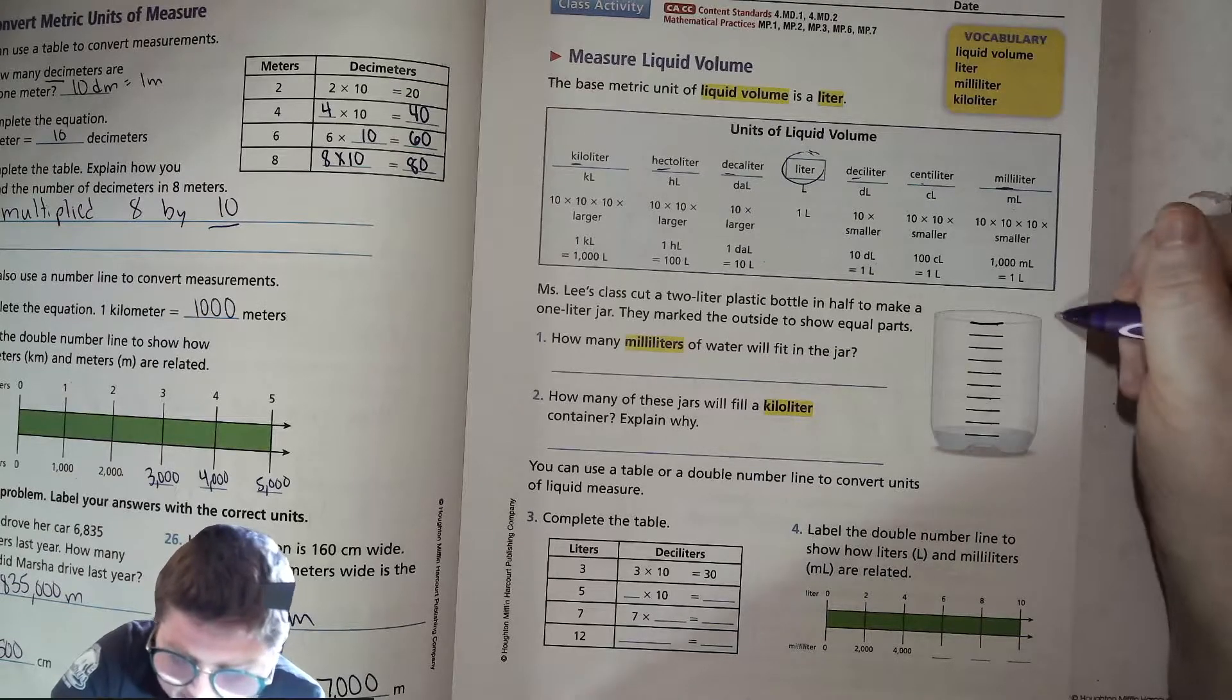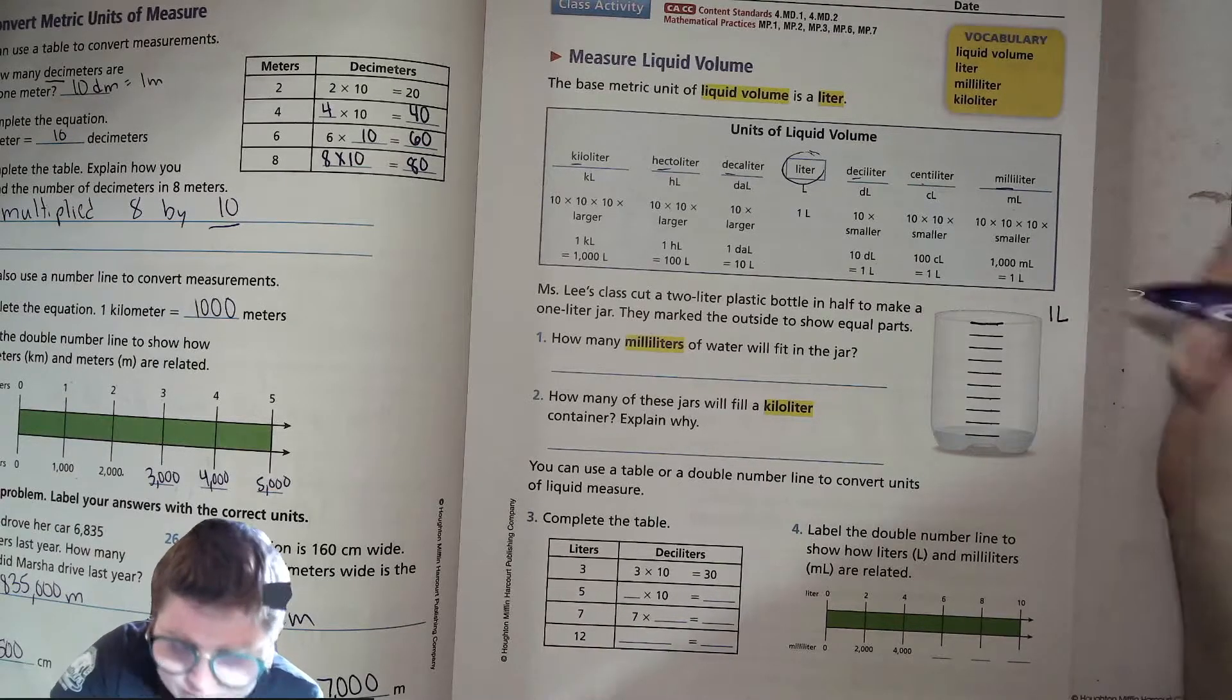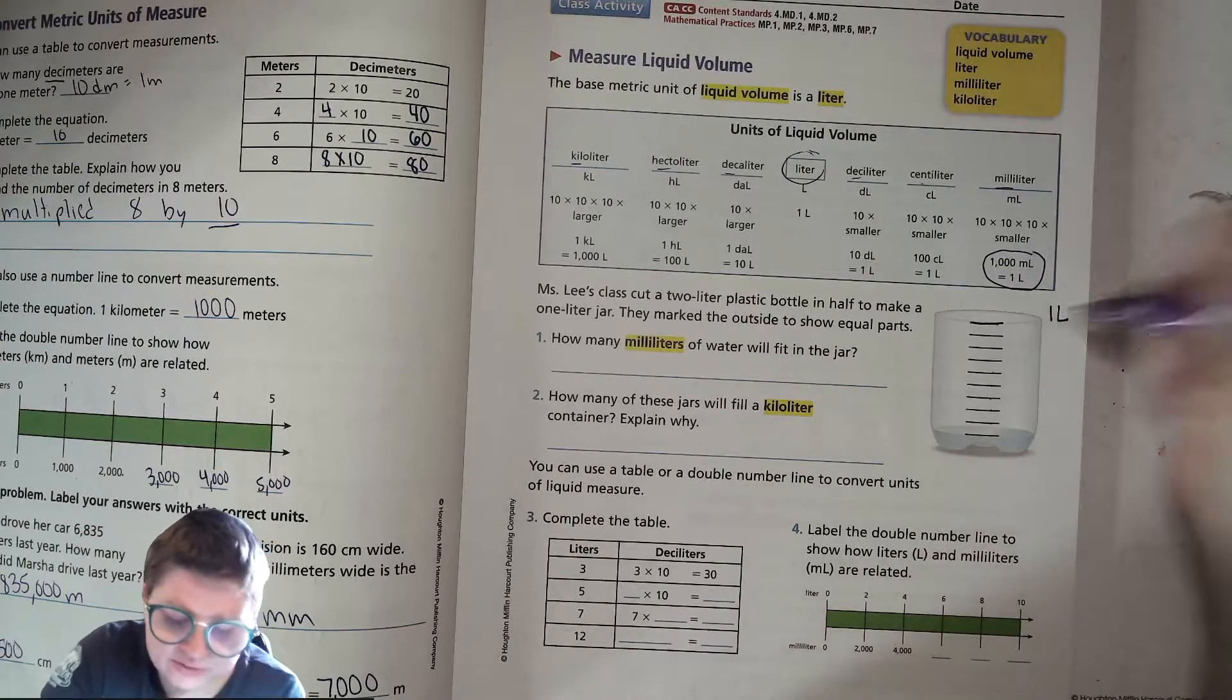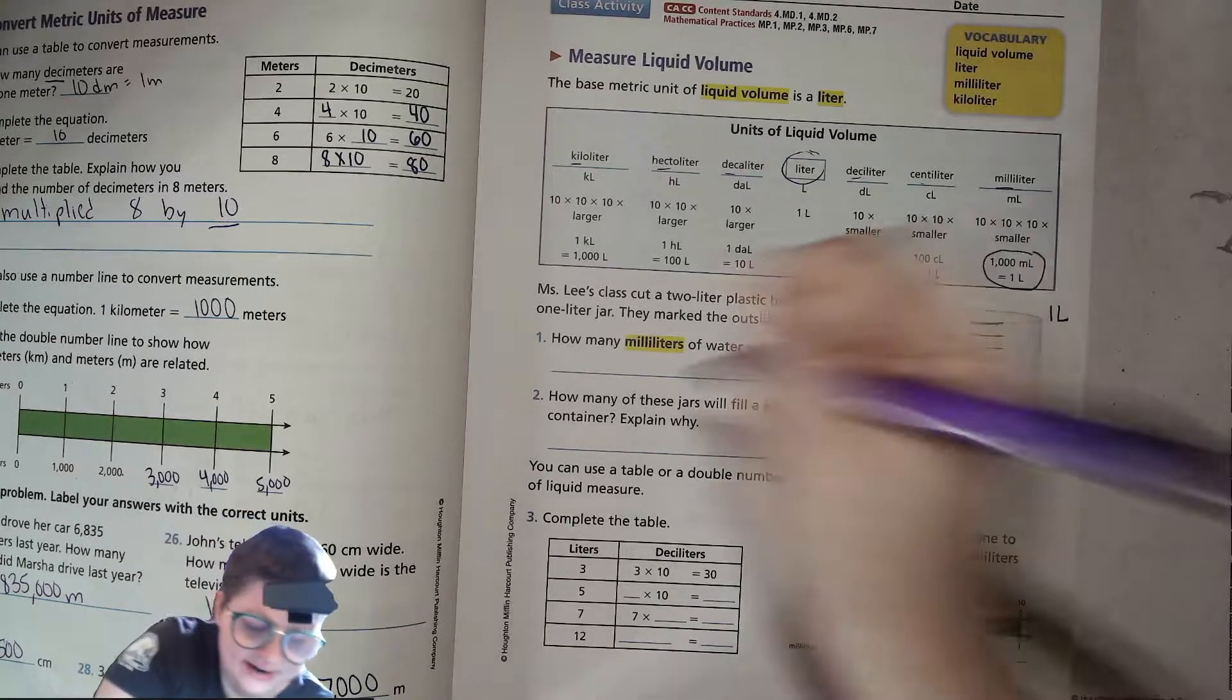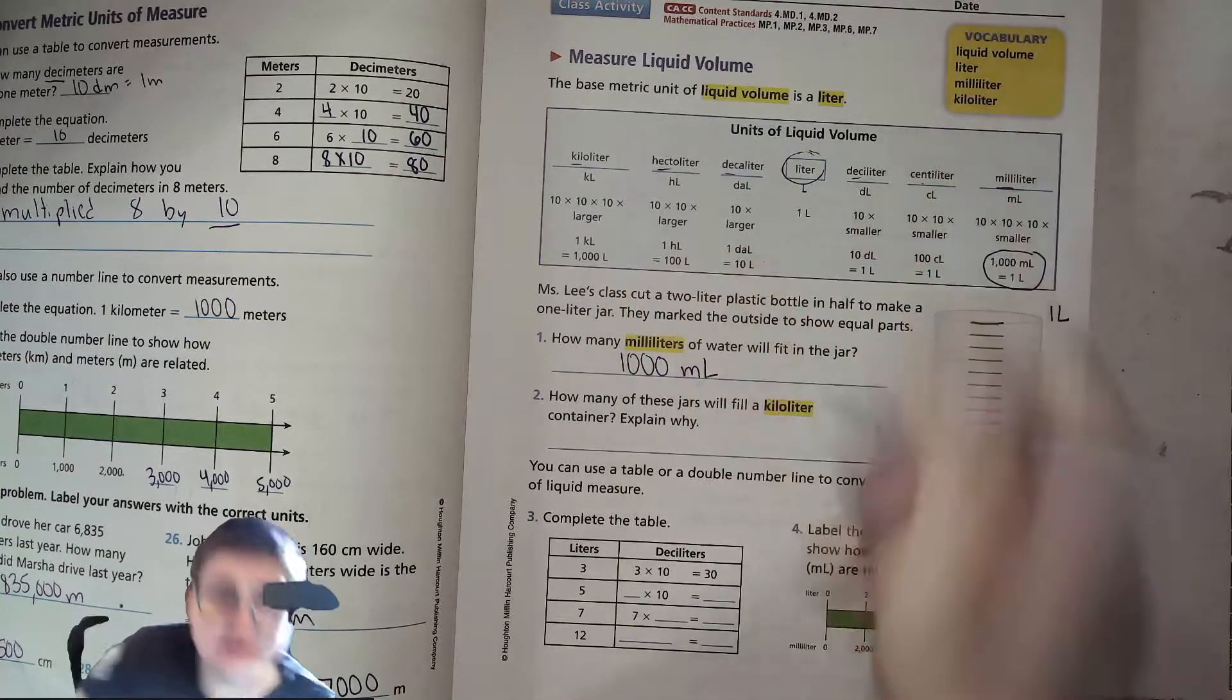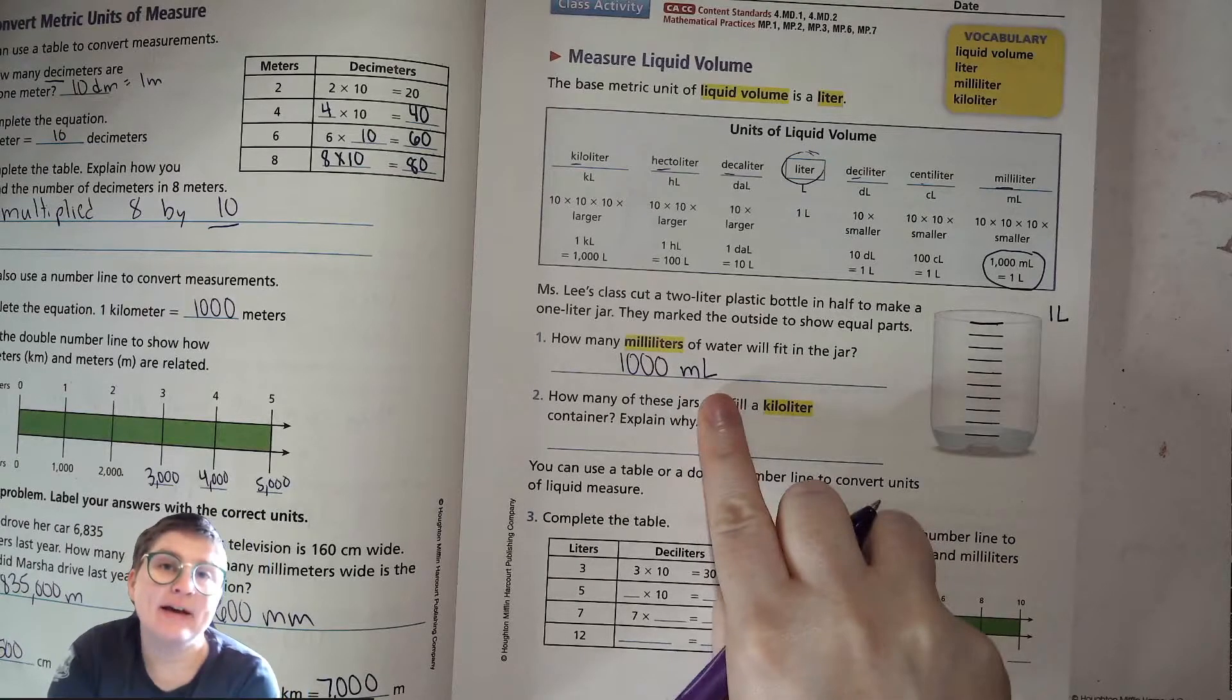this is one liter, we know that in one liter, there are 1000 milliliters all the way to the top. There's going to be 1000 milliliters with the little m and the capital L.